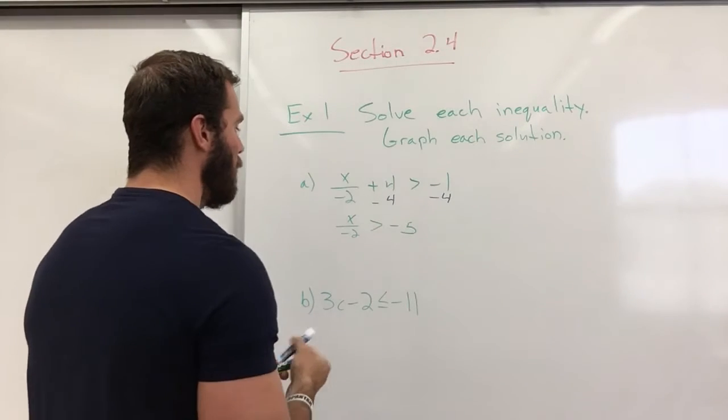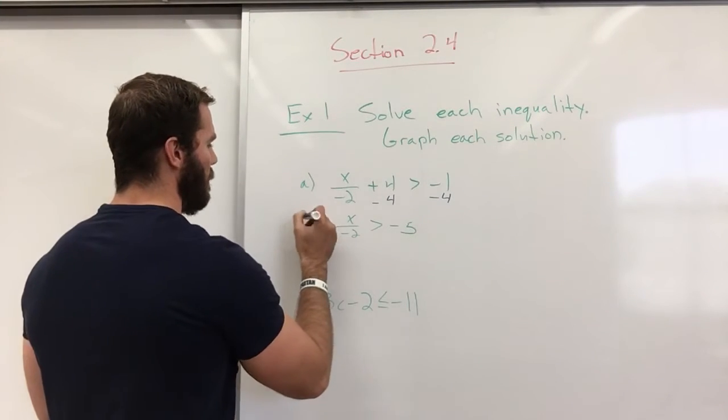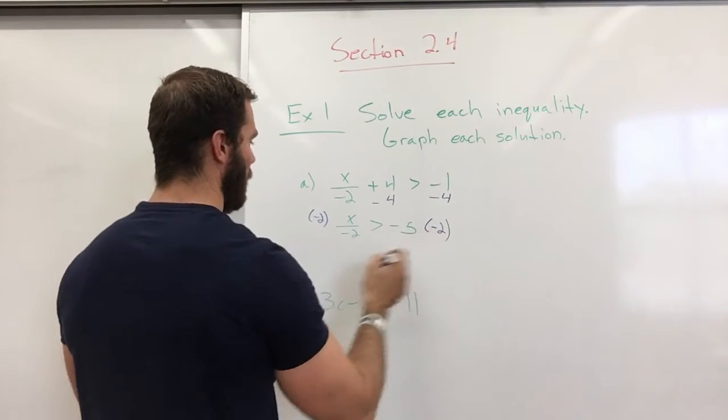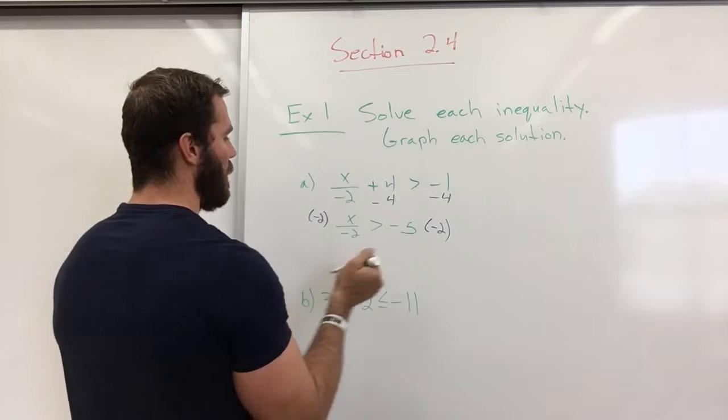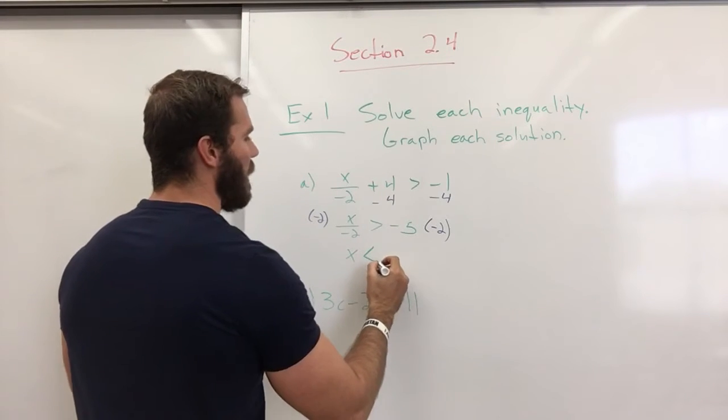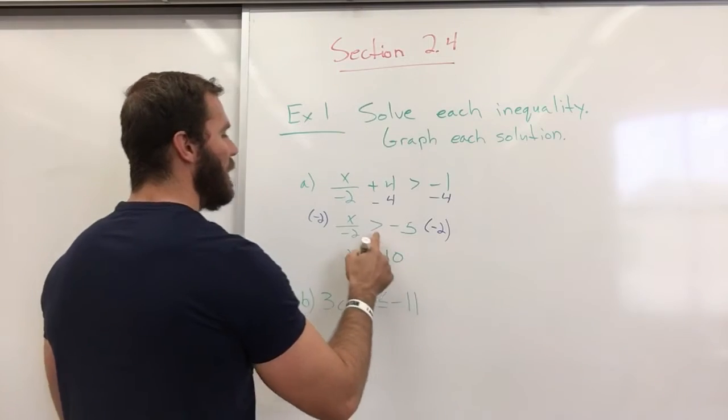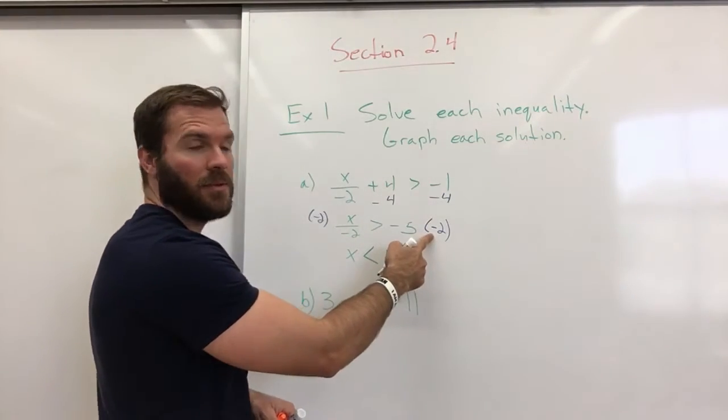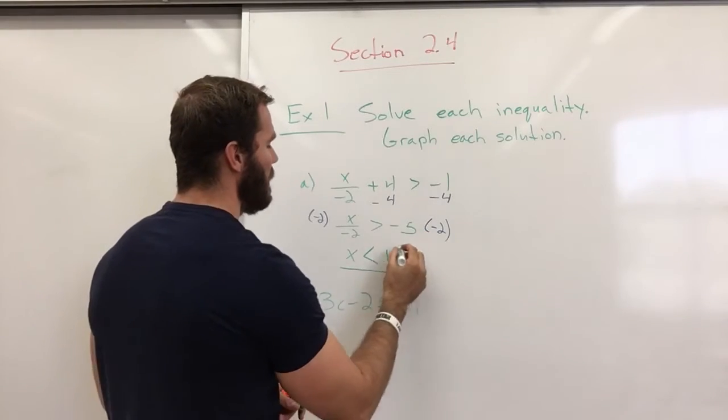Then I'm going to multiply by negative 2. And so now I have x is less than 10. It reversed because I multiplied by negative numbers. So x is less than 10.